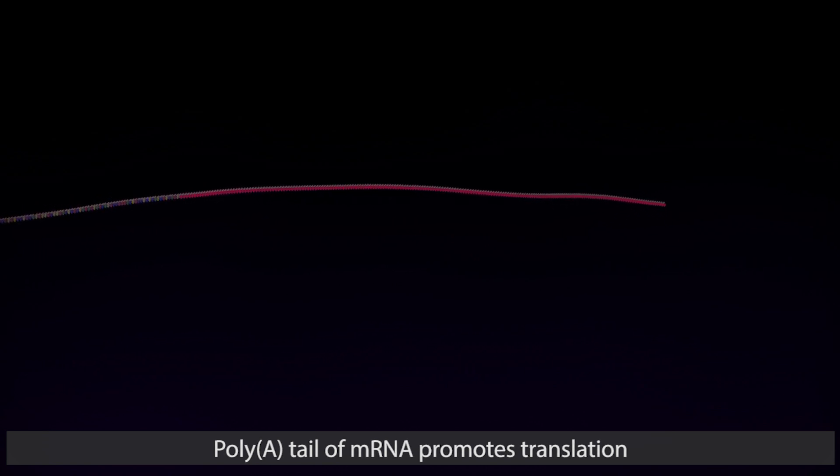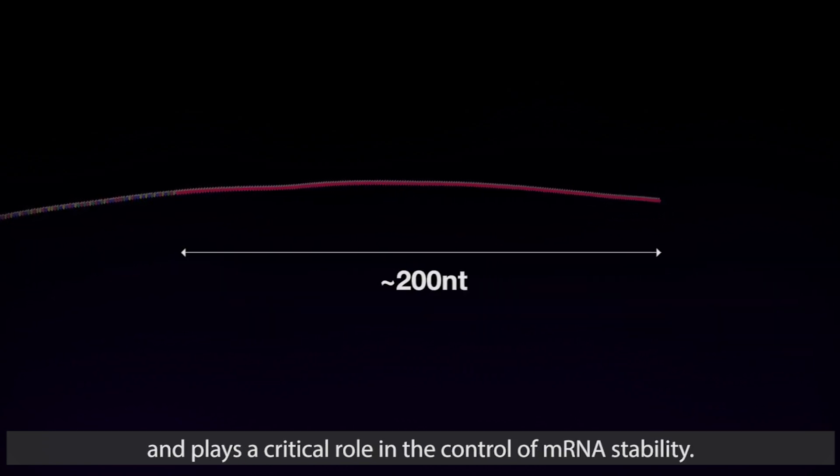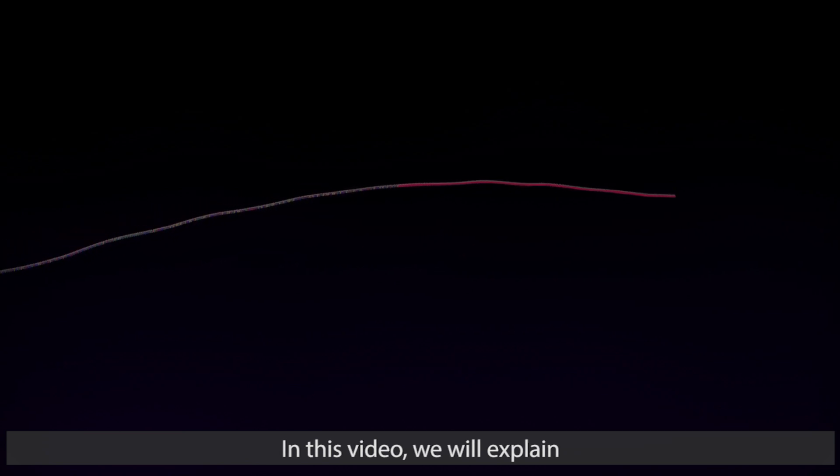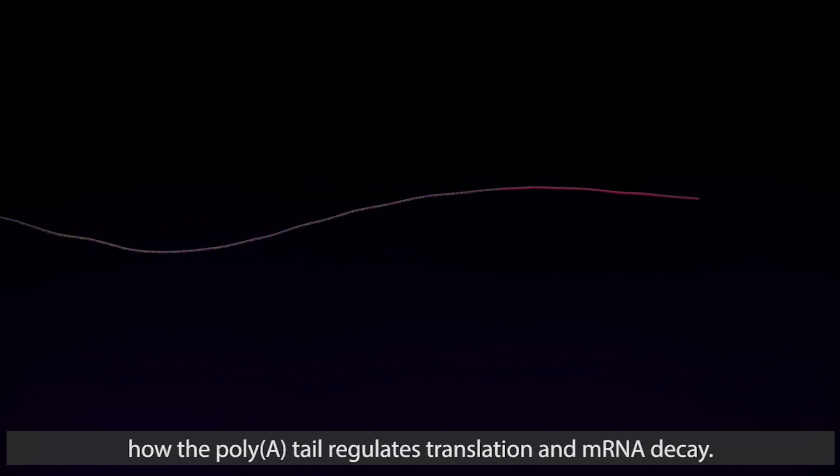Poly(A) tail of mRNA promotes translation and plays a critical role in the control of mRNA stability. In this video, we will explain how the poly(A) tail regulates translation and mRNA decay.